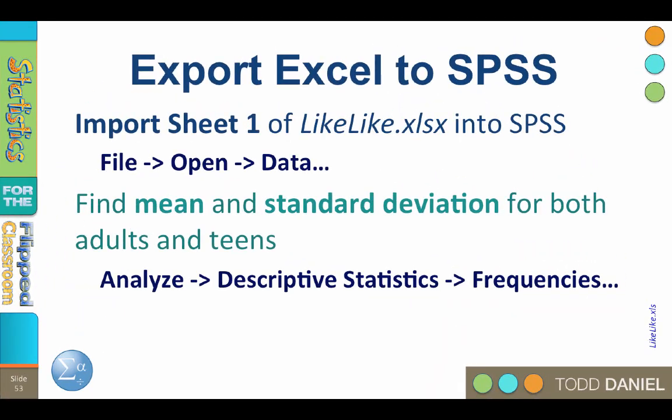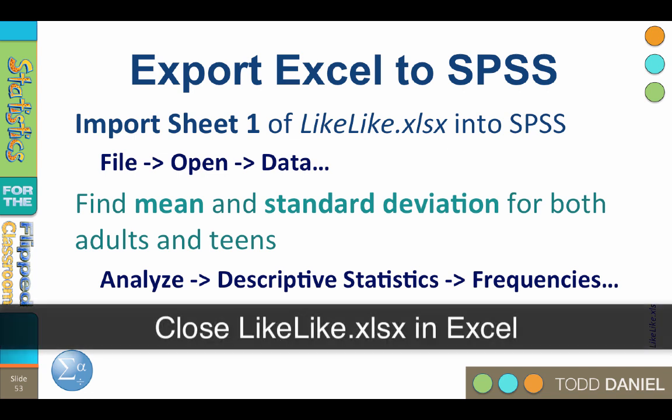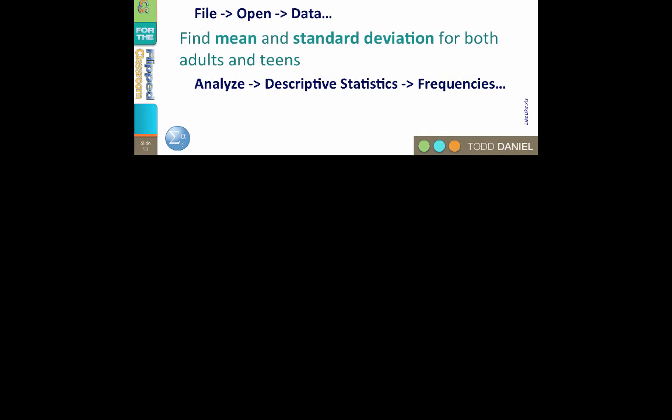We will import this data into SPSS, then find the means and standard deviations for both adults and teens using the frequency menu. The likelike.xlsx workbook should be saved to your desktop. Close the workbook — this will not work if it is still open in Excel. Now open SPSS.